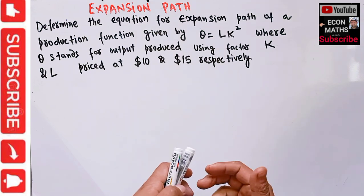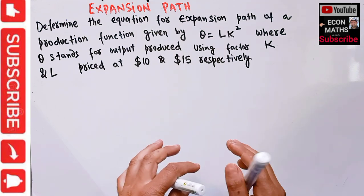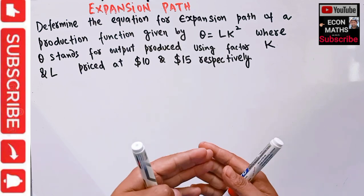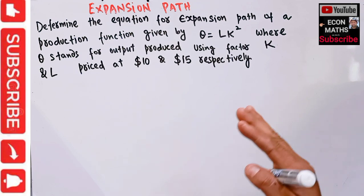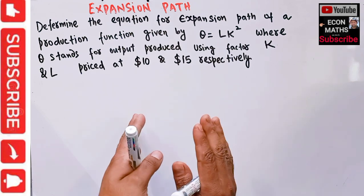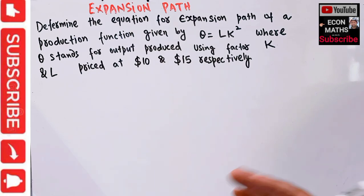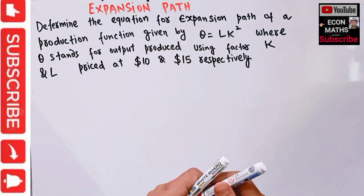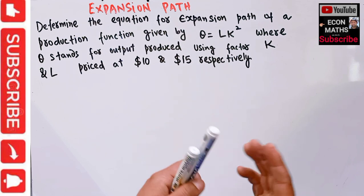What is the expansion path? The expansion path is a locus of different points of a firm's equilibrium when it changes its total outlay to expand output, while relative prices remain constant — the relative prices of the factors remaining constant.